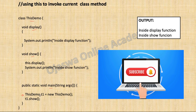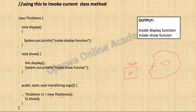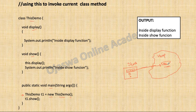The first statement here is thisDemo t1 equal to new thisDemo parenthesis — this is a constructor call. When this statement is executed, an object is created inside the memory. The reference variable t1 is created on the stack and the object is created on the heap.